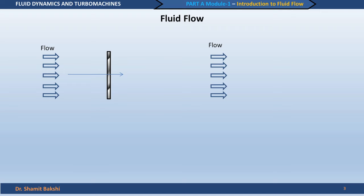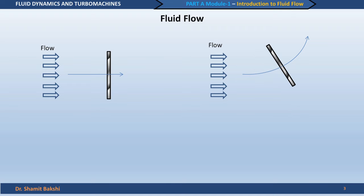Let us also look at the flow in a slightly different situation. Now we have the flow and a plate, but instead of being kept perpendicular to the direction of flow, we have inclined the plate a little bit. The plate now moves in a different trajectory. In the first case, we have a drag force — a force acting in the direction of the flow. In the second case, we have both a drag force and a lift force, which acts perpendicular to the direction of the flow.